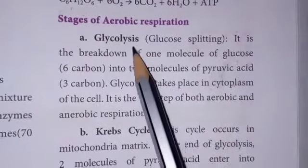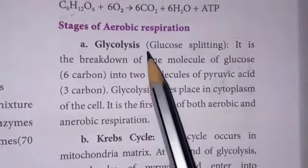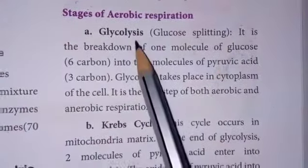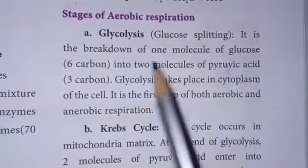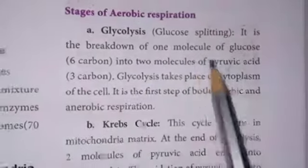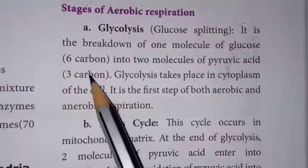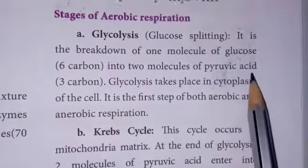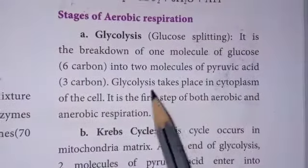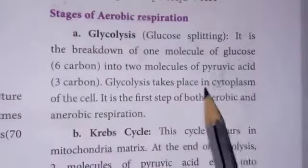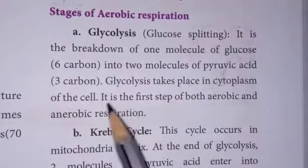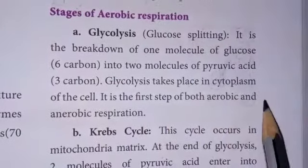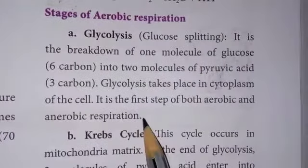Glycolysis is the breakdown of one molecule of glucose — a 6-carbon molecule — into 2 molecules of pyruvic acid. Glycolysis takes place in the cytoplasm of the cell. It is the first step of both aerobic and anaerobic respiration.